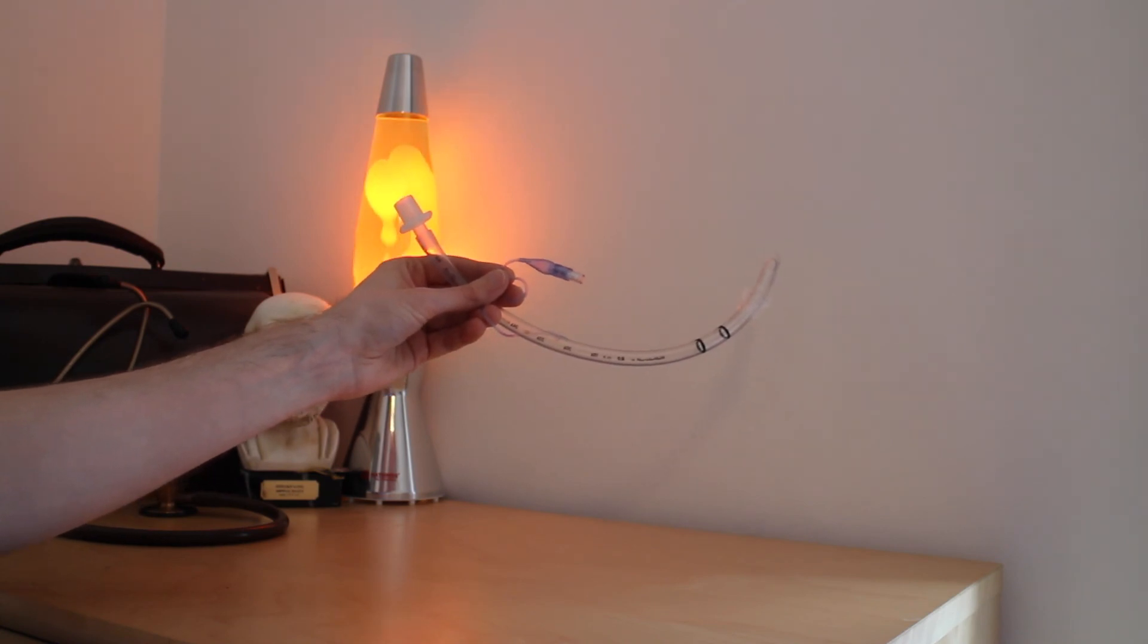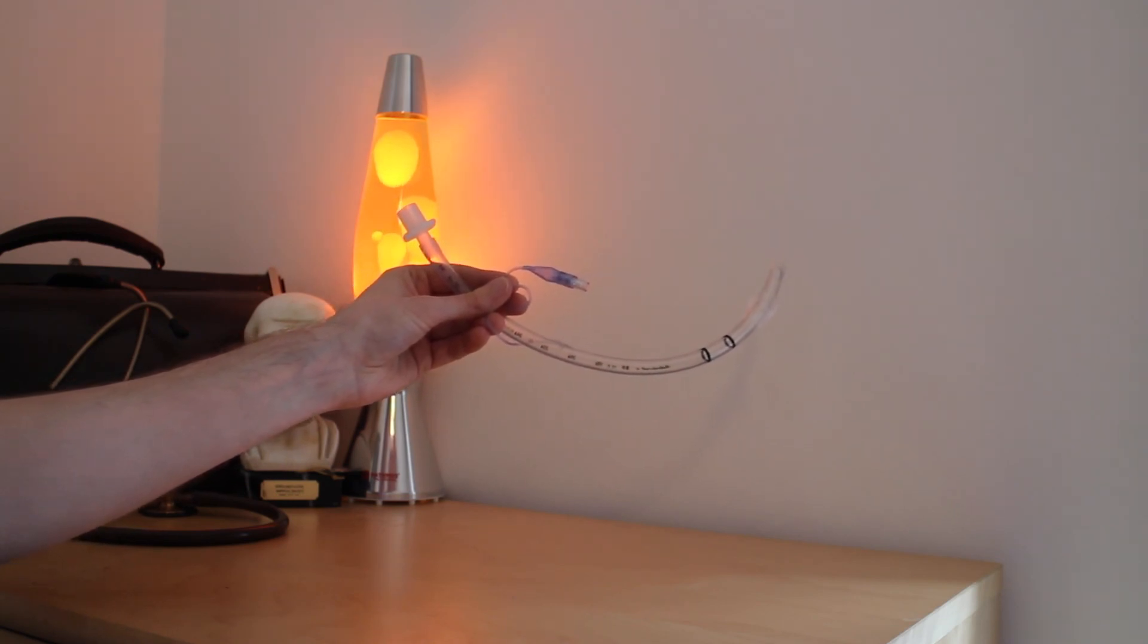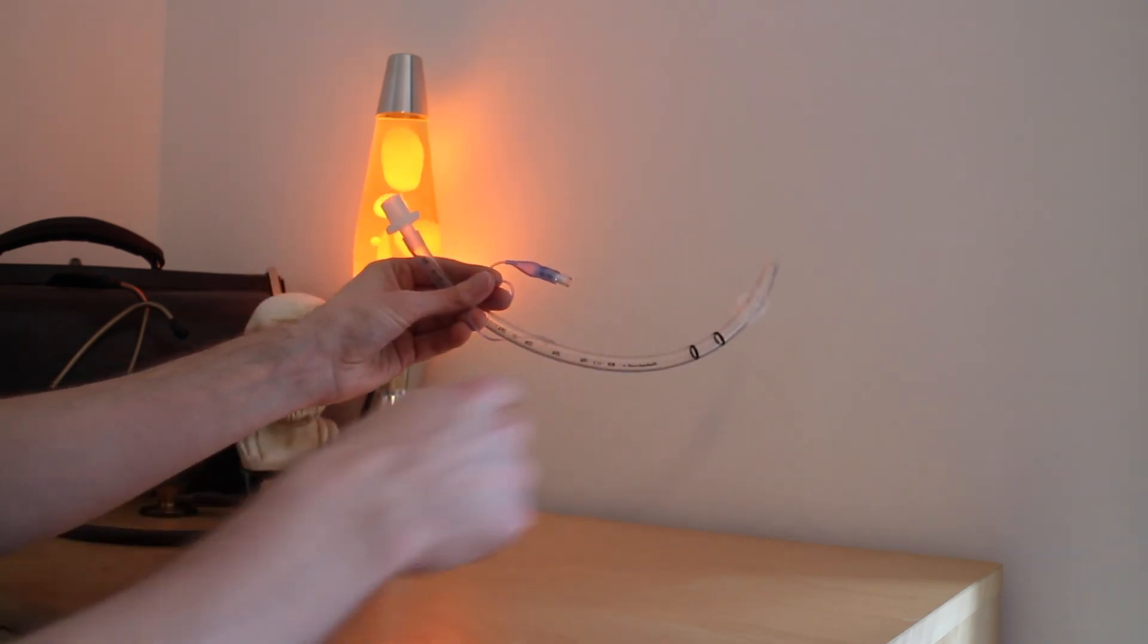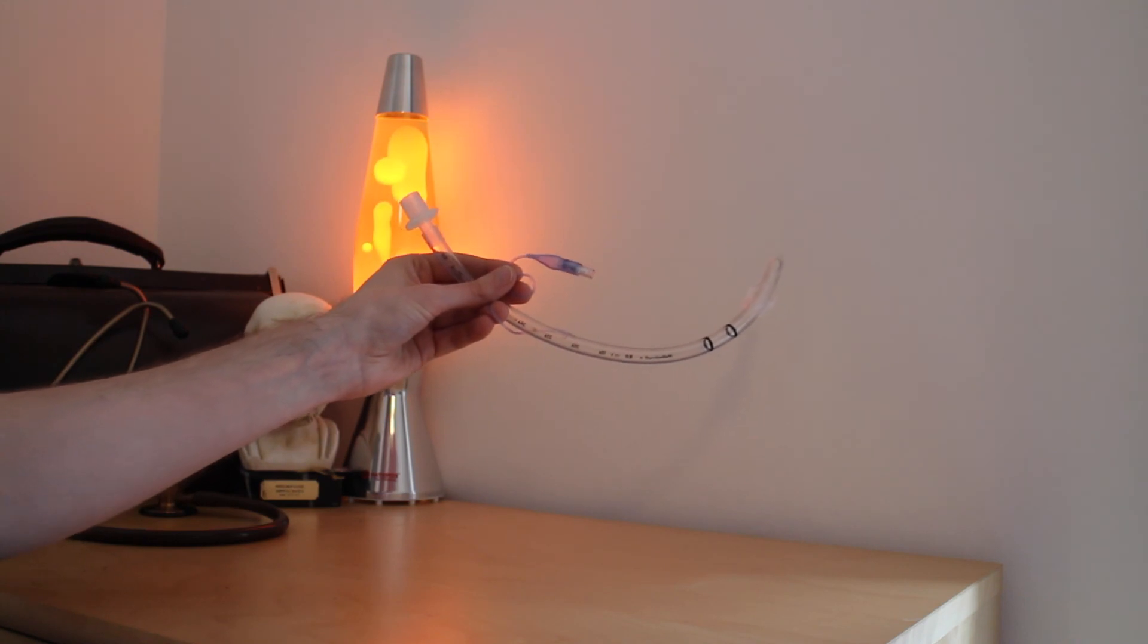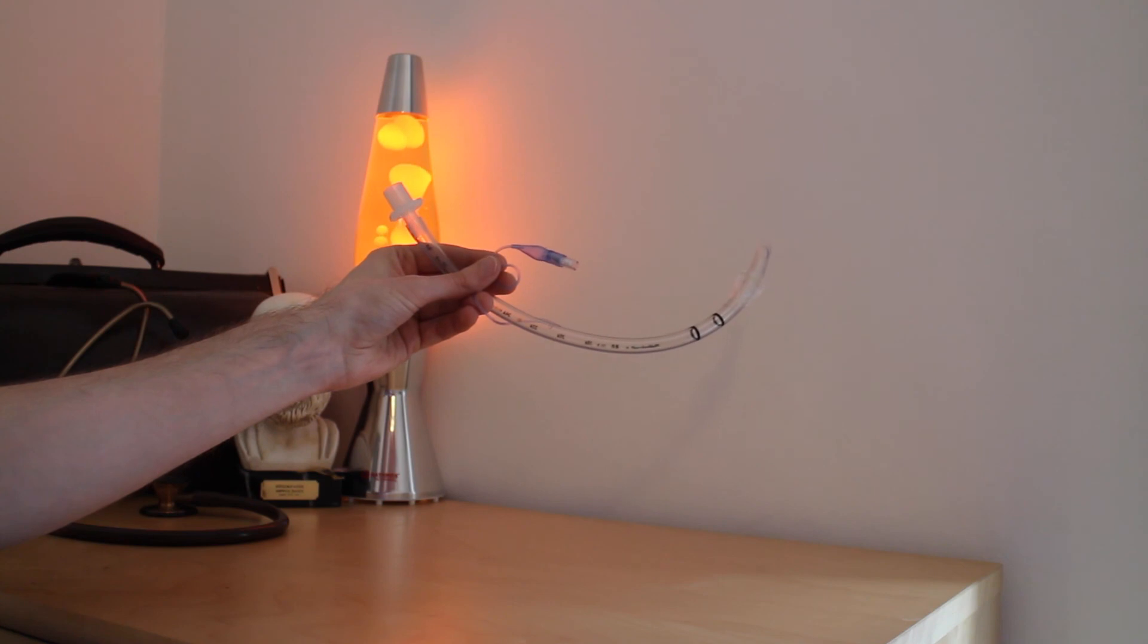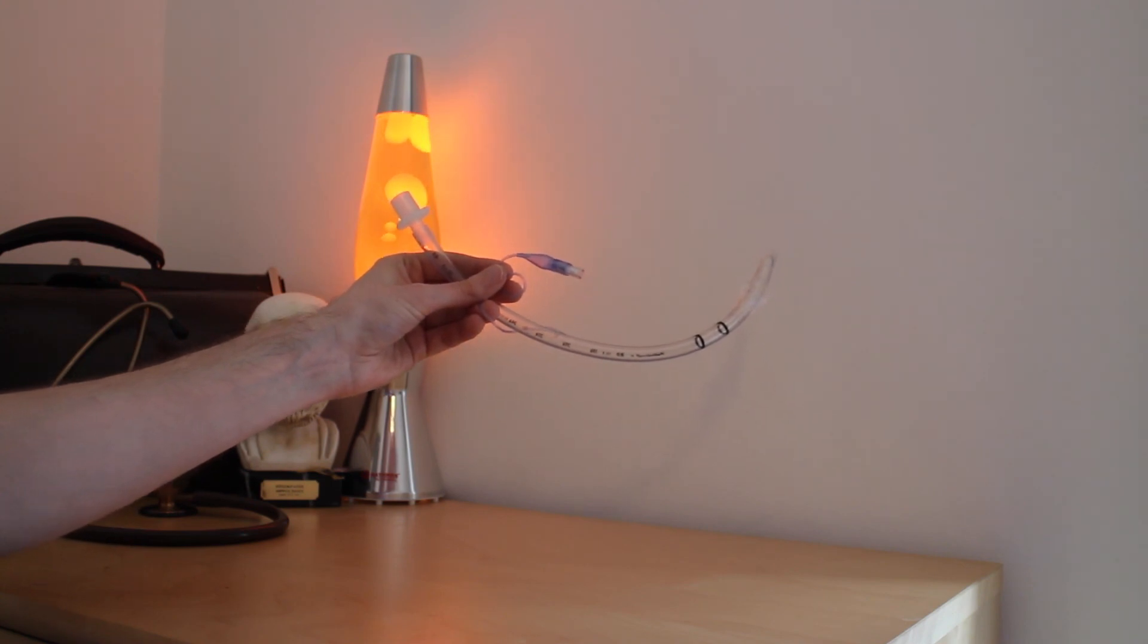In summary, this is a sterile single-use ET tube or endotracheal tube. It is used to provide a definitive airway during procedures such as a general anaesthetic, or in an emergency situation it may be used in patients with cardiac or respiratory arrest.